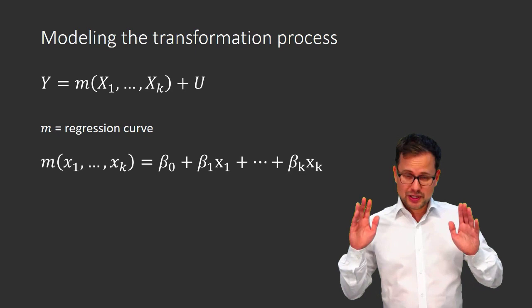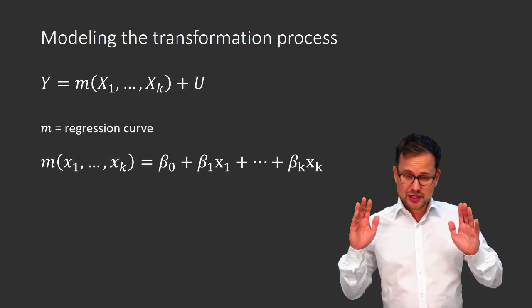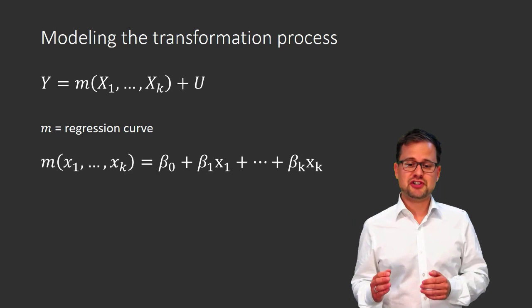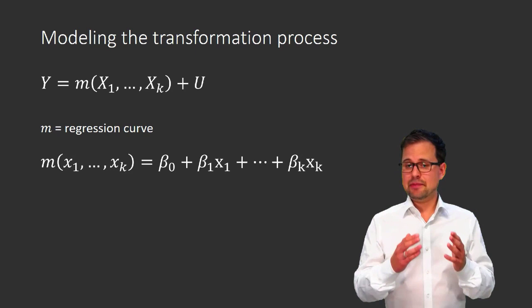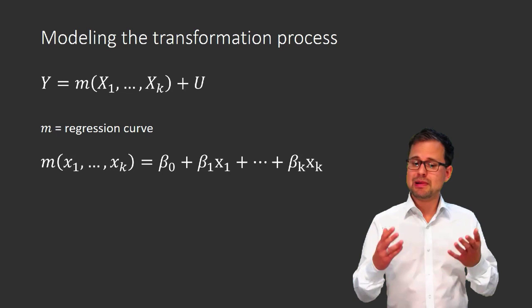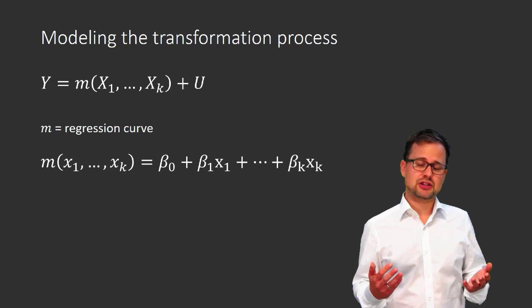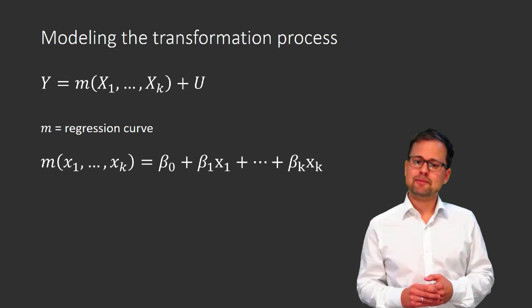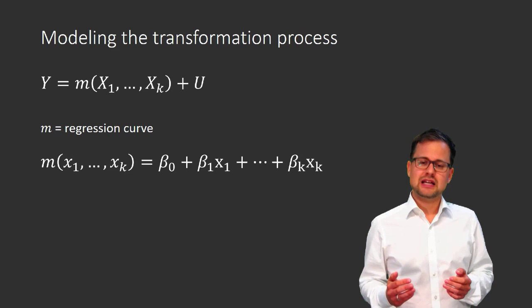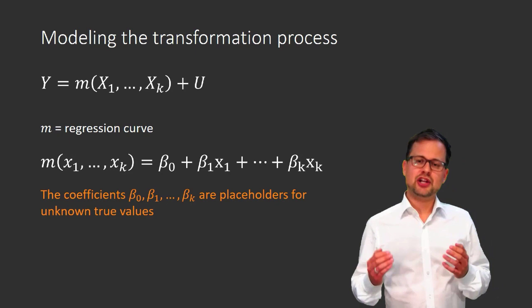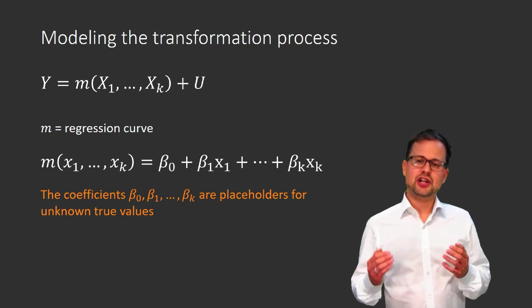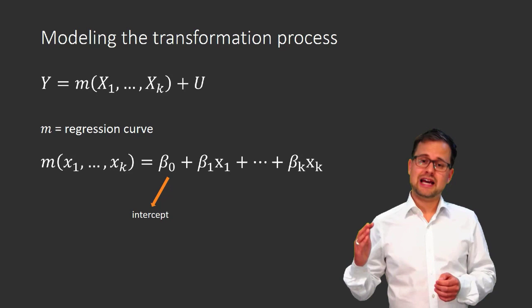M combines the x's in a linear way. To know exactly how m translates x's into a number, we need to know the betas. These betas are numbers, but we don't know which numbers they represent — since m is part of a transformation process determined by economic realities we might not completely understand. So we use the betas as placeholders for the unknown true values. Beta-naught is called the intercept, and the other betas that multiply x's are called slope coefficients.